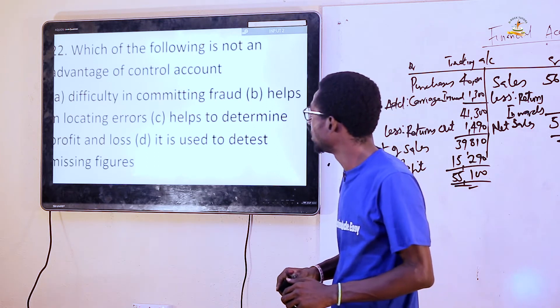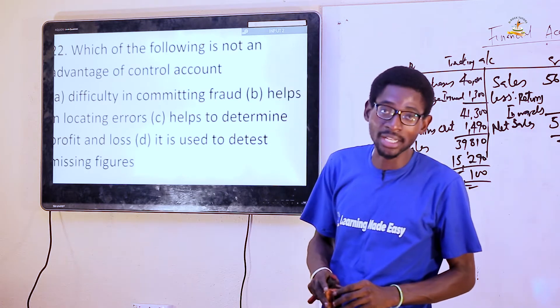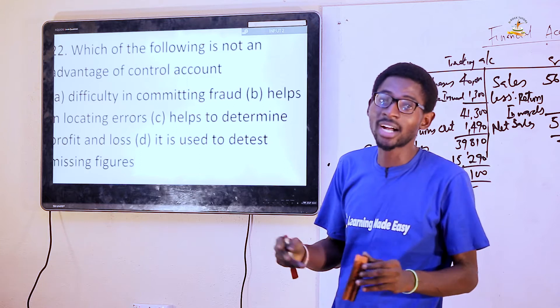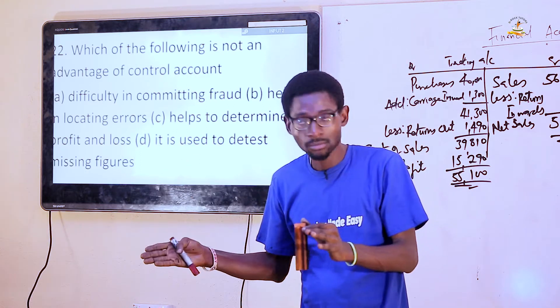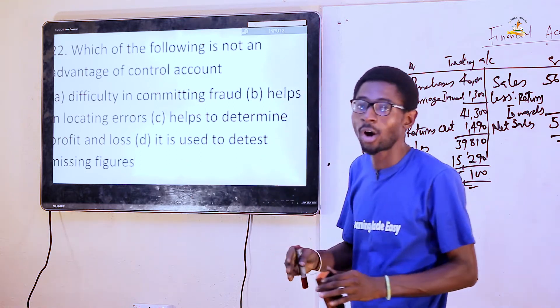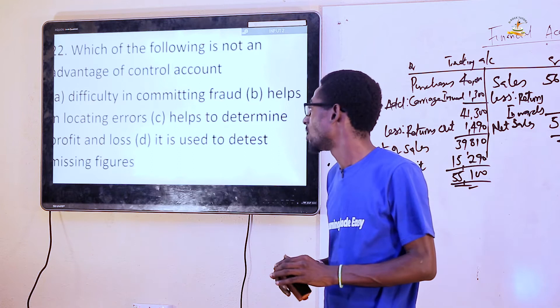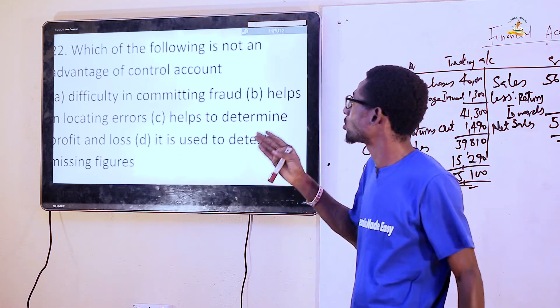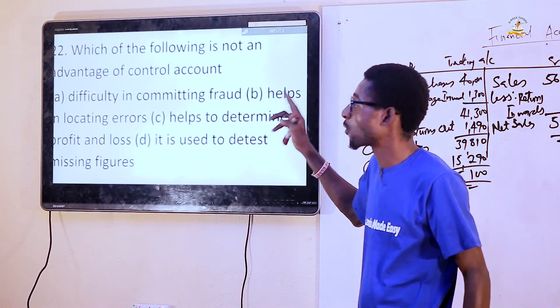Question 22: Which of the following is not an advantage of controlled accounts? Controlled accounts is called a memorandum account. It is also called a self-balancing account. So you decide which of the following is not an advantage of controlled accounts.